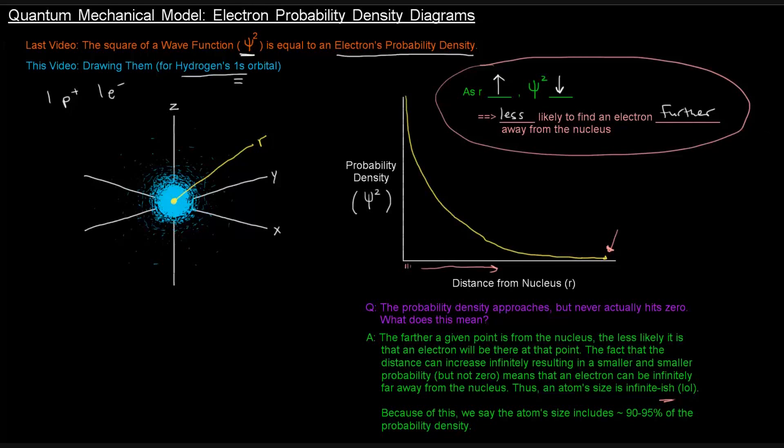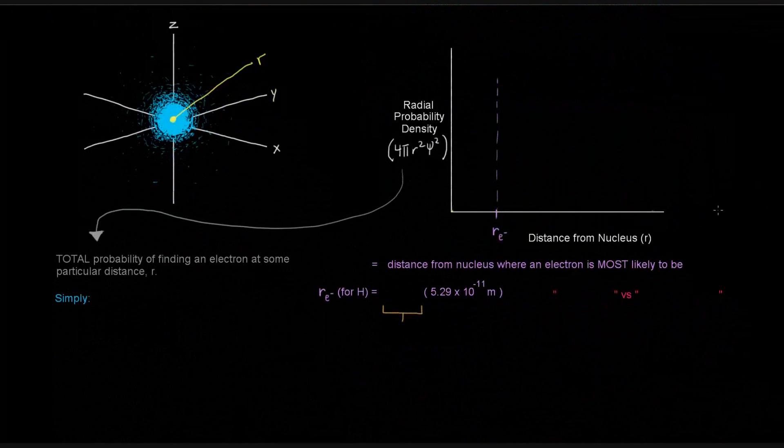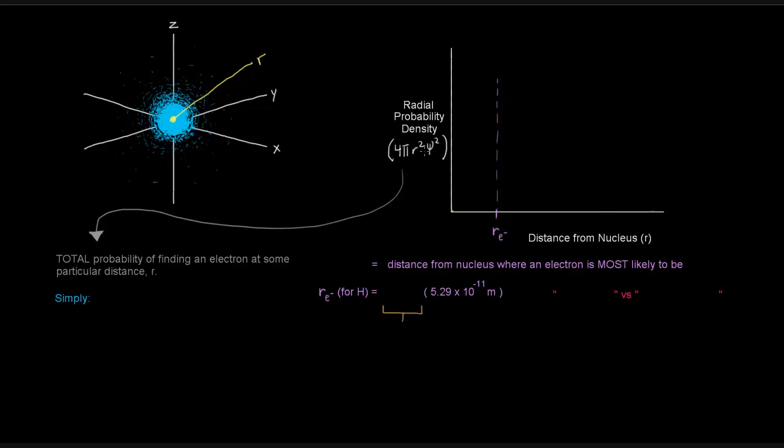Now, there's another way to think about probability density, and that is radial probability density. So that's not just psi squared, it's 4 pi r squared psi squared. But what this is, the radial probability density, is the total probability of finding an electron at some particular distance r away from the nucleus. So it's not just the probability of finding an electron at a certain point that's r distance away, but the total probability of finding an electron within that distance r away.